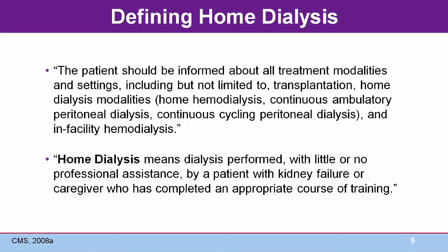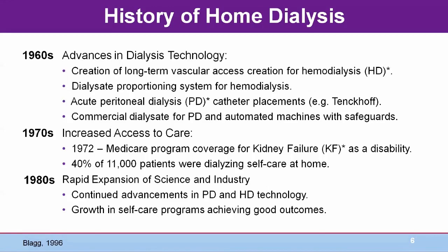A brief history of dialysis: in the 1950s, some acute kidney failure patients' lives were saved by acute hemodialysis treatments. In the 1960s, long-term vascular access creation meant chronic hemodialysis could save the lives of patients with chronic kidney failure. However, limited resources meant that patients fortunate enough to be selected for treatment had to dialyze themselves at home — so began dialysis in the home setting.